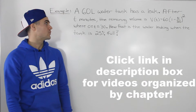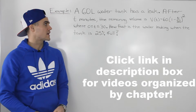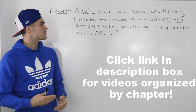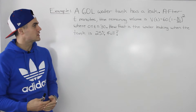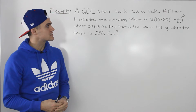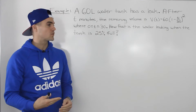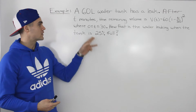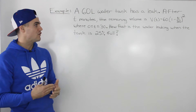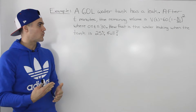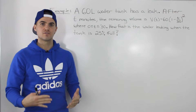Moving on to the next example, we have a 60-liter water tank that has a leak, and after t minutes the remaining volume is modeled by V(t) = 60[1 - t/30]², where t is between 0 and 30 minutes. How fast is the water leaking when the tank is 25% full?